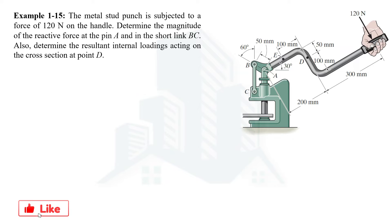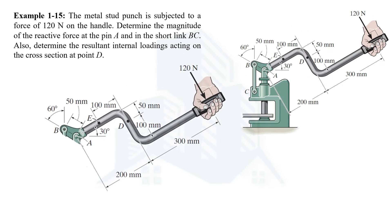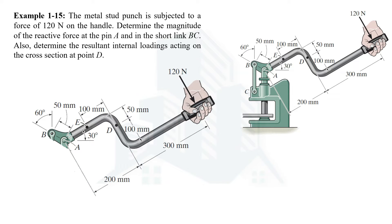Let's solve first for the magnitude of the reactive force acting at pin A. To determine that, we need to draw the free body diagram. Considering this handle, the forces acting on it are: the 120 N hand force, the reaction forces at pin A, and the force along member BC. At pin A we draw the vertical component FAY and the horizontal component FAX, and the force along BC member represented as FBC.